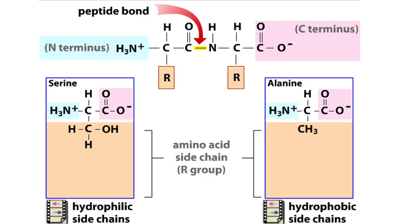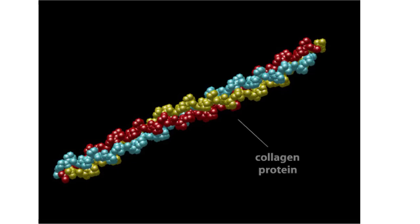Proteins are chains of amino acids linked by peptide bonds. The 20 different amino acids used to make all proteins differ only in their side chains, and the properties of these side chains account for the great diversity of protein structure and function. Collagen is an example of how a protein's amino acid sequence determines its structure and function. Amino acid sequences are encoded in the DNA of genes.